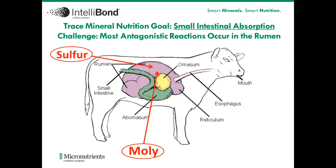Before we get into that, I'd like to mention what is the goal of trace mineral nutrition and why would these sources and their differences be important. At the end of the day, our goal around trace mineral nutrition is to get the mineral past the rumen into the small intestine so it can be absorbed there and used by the animal for whatever biological purposes it needs. Getting past the rumen is important because most of our antagonistic reactions in the beef industry are geared around sulfur and molybdenum and their tie-up with copper, and that reaction happens most of the time in the rumen. So our goal should be to get most metals out of the rumen into the small intestine for absorption by the animal.